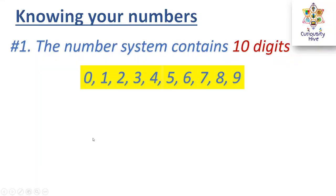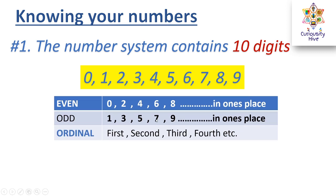The number system contains 10 digits starting from 0 to 9. Even numbers are numbers that end with 0, 2, 4, 6, and 8. Odd numbers are those numbers that end with 1, 3, 5, 7, and 9 — these numbers appear in the ones place of the entire number. Lastly, ordinals are the position names, for example 1st, 2nd, 3rd, 4th, etc.